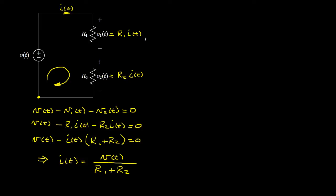Using that expression for the current, we can write an expression for the voltage V1. Since I of t is V of t over R1 plus R2, we multiply by R1 to get V1 equals V of t times R1 over R1 plus R2.